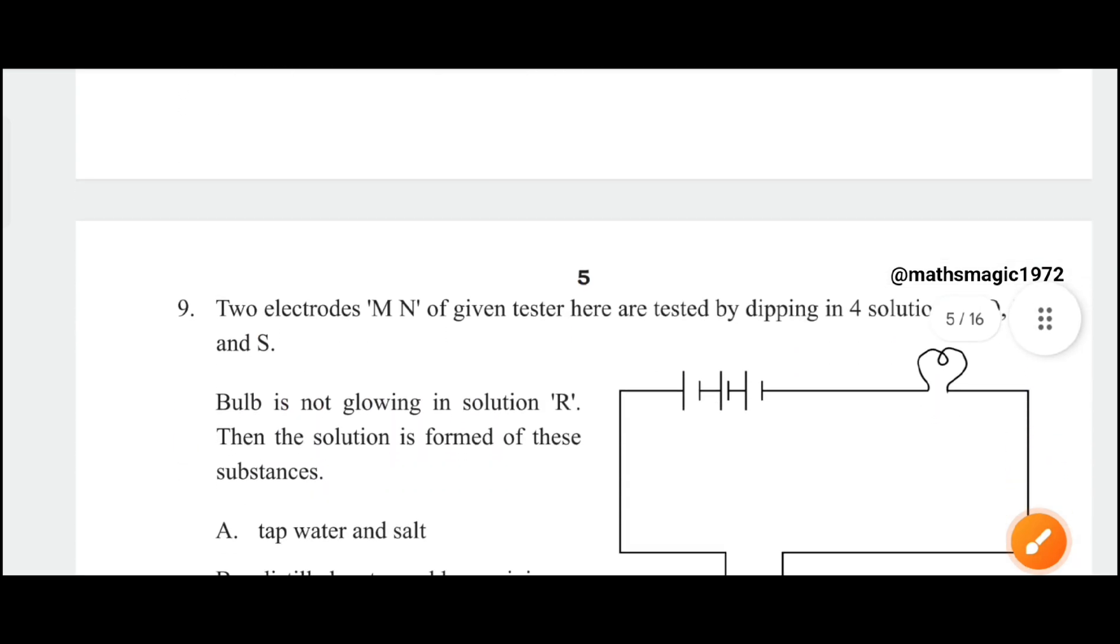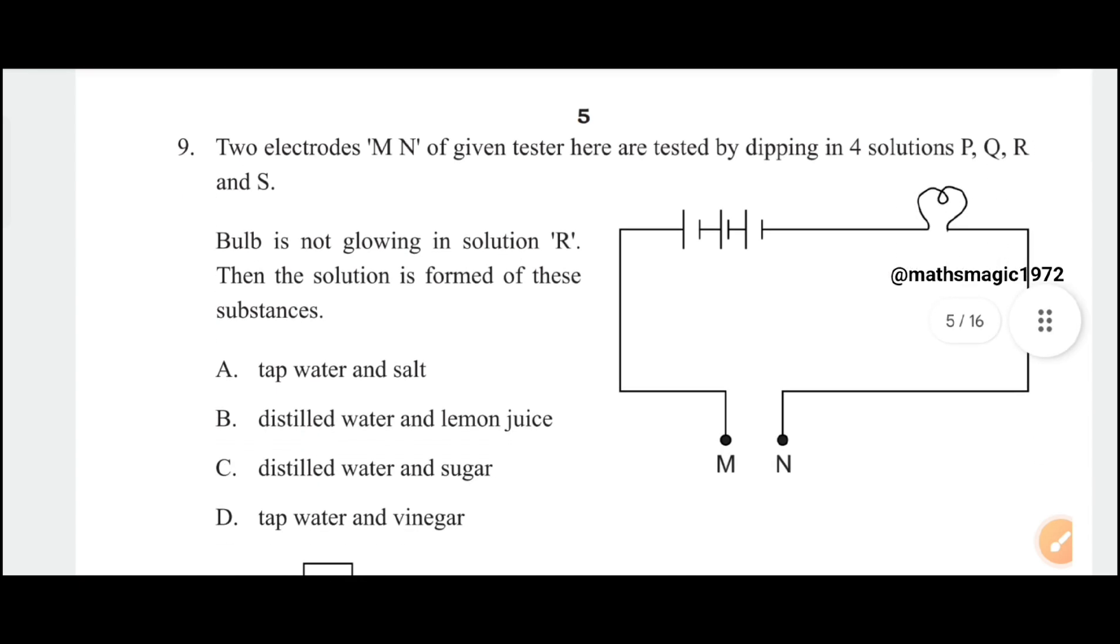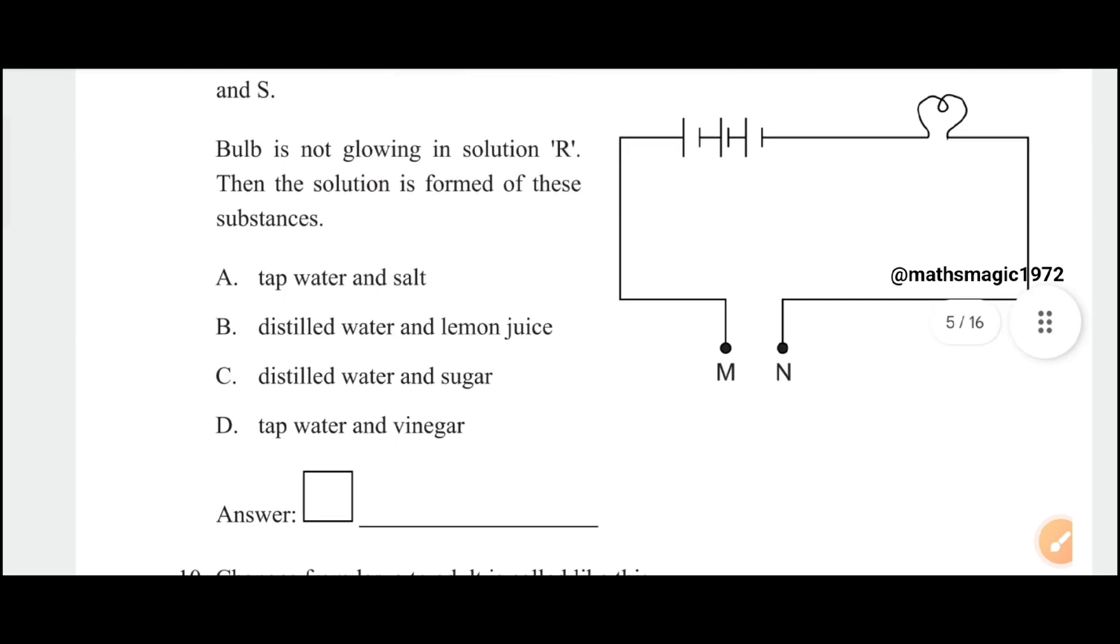Two electrodes M and N of the given tester here are tested by dipping in four solutions P, Q, R, and S. Bulb is not glowing in solution R. Then the solution is formed of these substances: A) tap water and salt, B) distilled water and lemon juice, C) distilled water and sugar, D) tap water and vinegar. The correct answer is option C, distilled water and sugar.